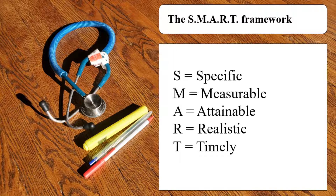Measurable means that your goal has to have the ability to be evaluated objectively by your teachers. You need to be able to quantify it — you cannot just say 'I feel that I met that goal.' Subjectivity cannot be part of a goal; it needs to be objective.